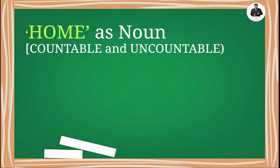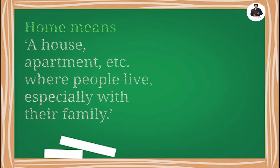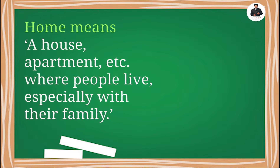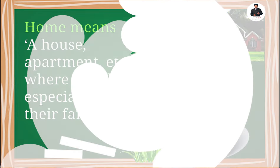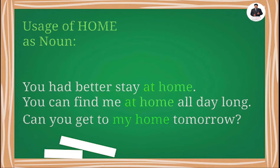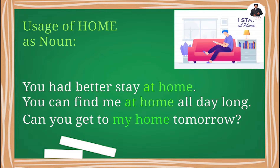Home as a noun is used as both countable and uncountable. Home means a house, apartment, etc., where people live, especially with their family. Usage of home as a noun — examples: 'You had better stay at home.' 'You can find me at home.'